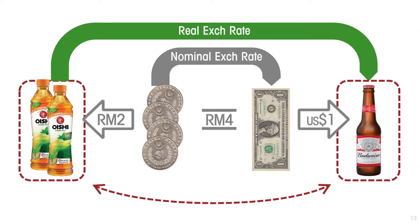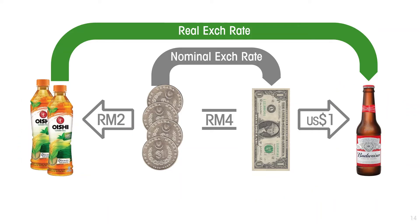Bearing in mind that the real exchange rate is not about beverages per se — it's not specifically about tea and beer, but about Malaysian products in general and American products in general. We are using bottles of each beverage as representative of the value of products in each country. Now we can explore how the real exchange rate is affected by changes in each of the variables: the Malaysian price level, the exchange rate between ringgits and dollars, and the US price level.